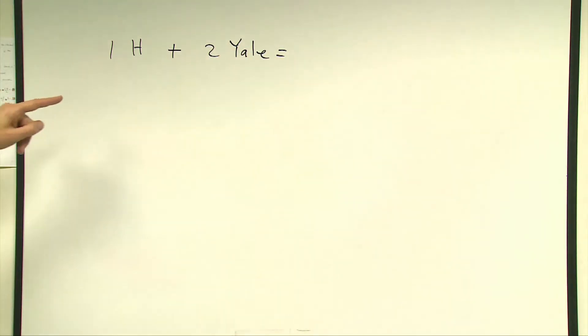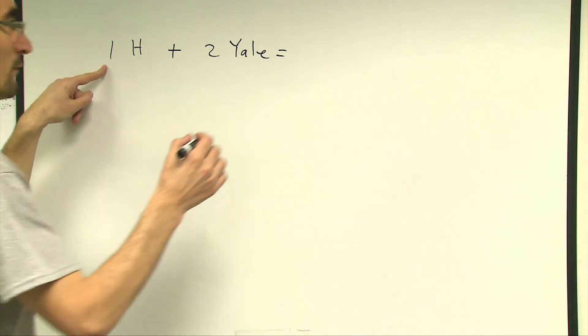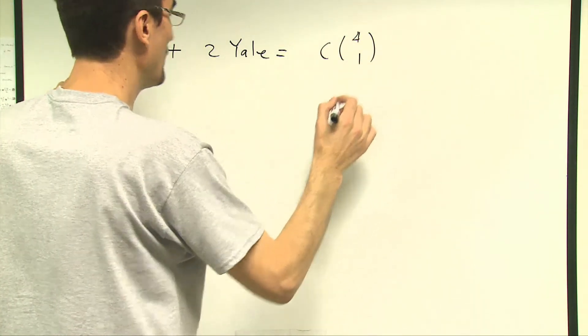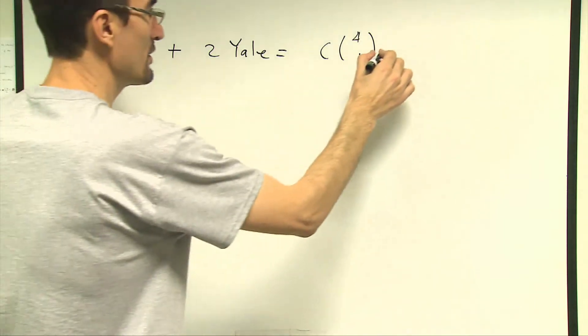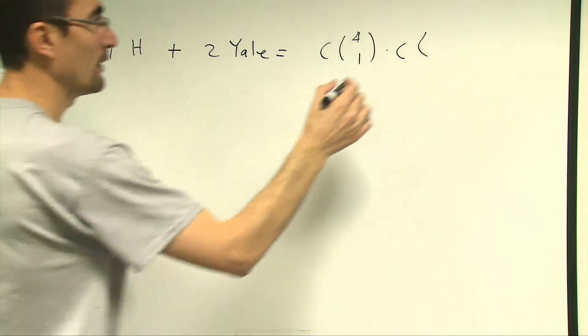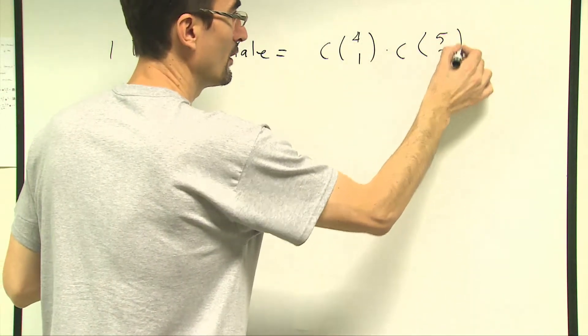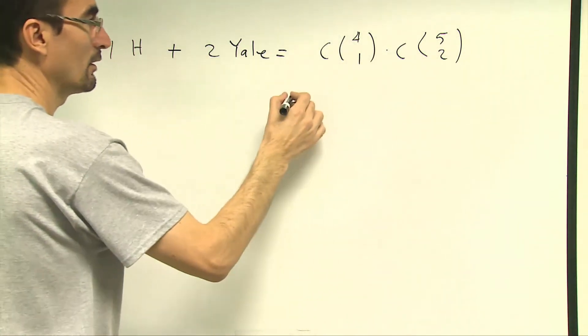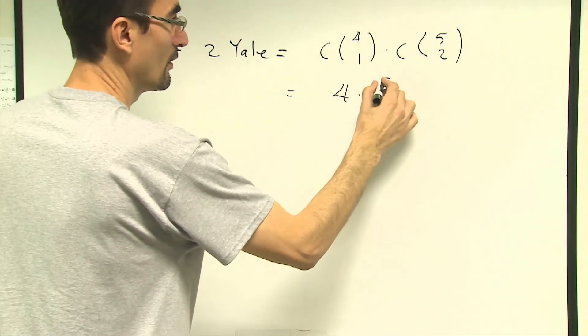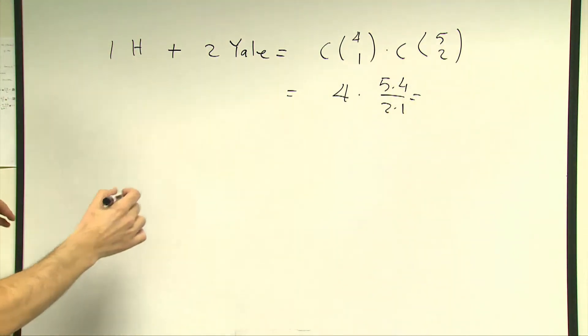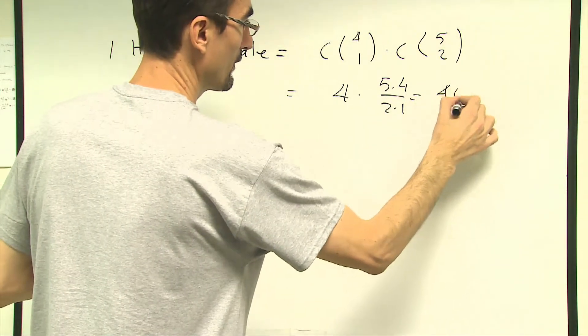In how many ways I can choose one Harvard out of four Harvard professors will be a combination of four choose one. Times combination of choosing two Yale professors out of five will be five choose two. So if you do the calculation here, this will give us actually four times five choose two over one. That will be equal to 40 ways of doing this.